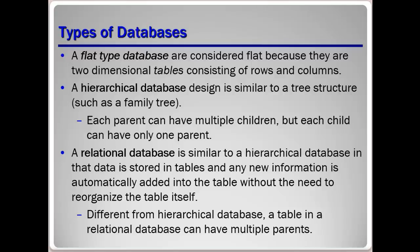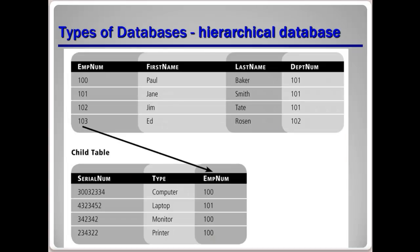Here's an example of a hierarchical database. The parent table holds the employee data, where each row or record provides an employee's information including their employee number shown in the EmpNum column. The child table holds the computer equipment data, and you can see where the EmpNum field is tied to the parent table. Because we're using a hierarchical database, we can assign multiple computer devices to each employee based on this hierarchical scheme.